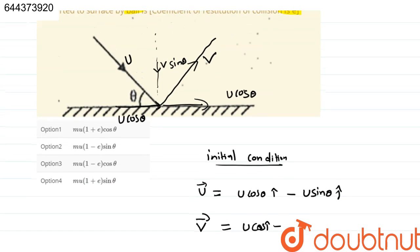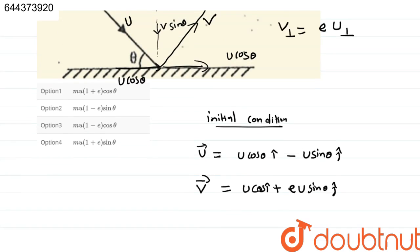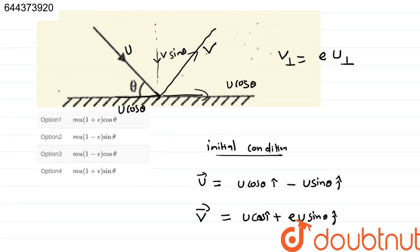So, vertical component has changed by v perpendicular is equal to e times u perpendicular. So, just multiply the vertical component by e, so you get e into u sin theta j cap and it will be positive because it has direction in this direction, e into u sin theta.